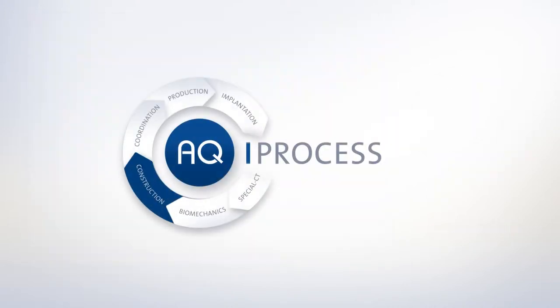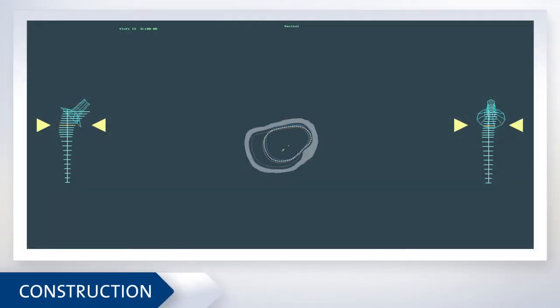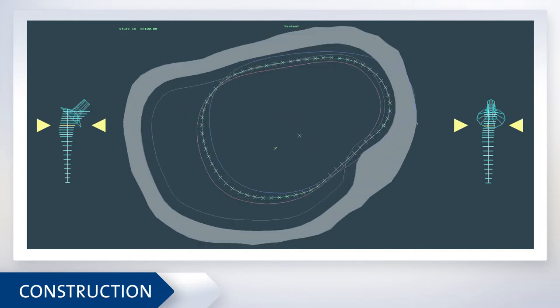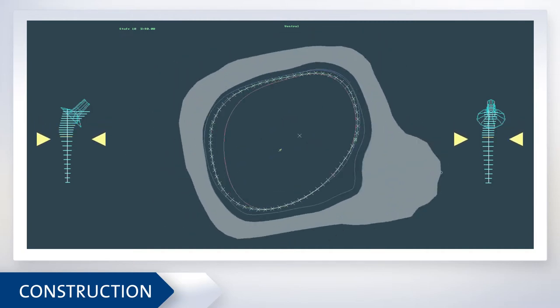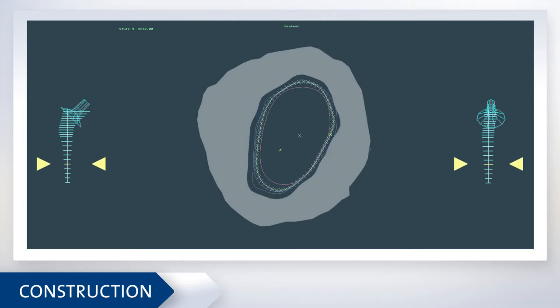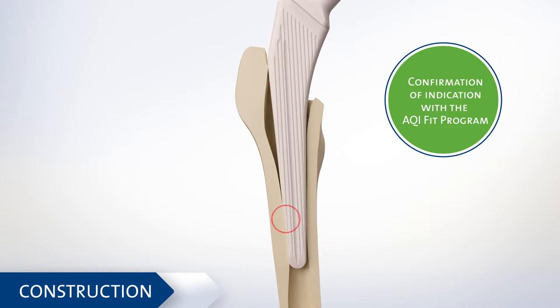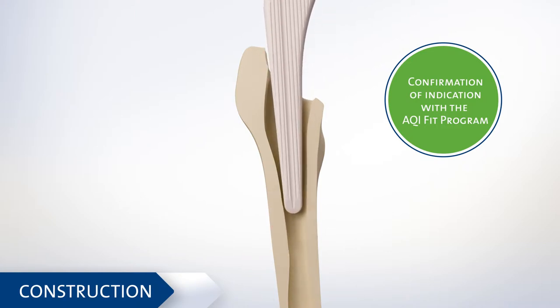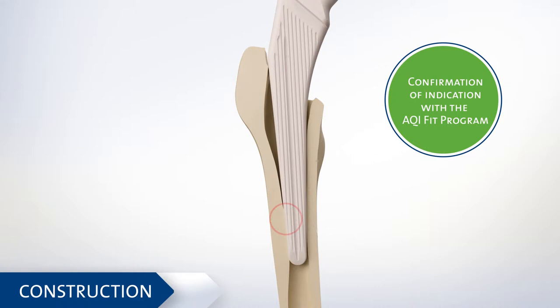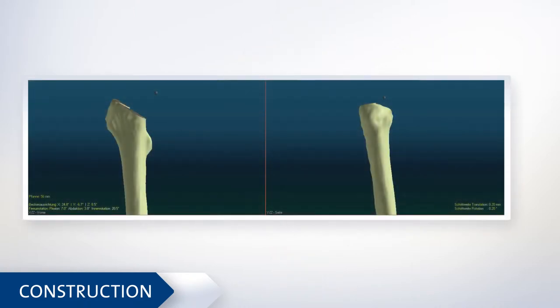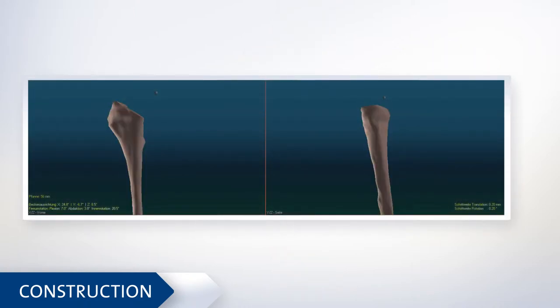Hip stem and hemipelvic prostheses are now designed. Initially, the femoral cavity is reconstructed on the basis of the CT data. With the AQI Fit Program, the defect situation is evaluated and a decision taken whether this patient can be treated with a standard prosthesis. If a custom-made prosthesis is indicated, the suitable implant design is derived from the reconstructed femoral cavity.